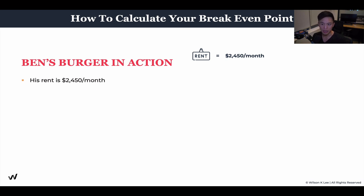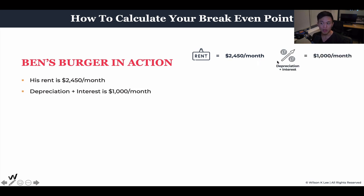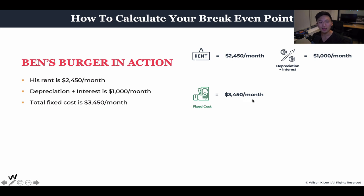Ben's Burger's projected rent is $2,450 per month. Because he borrowed money, he needs to pay interest, and on top of that, the renovation has depreciation to account for, which comes to roughly $1,000 per month. Adding these two together gives you the total fixed costs. No matter how many burger patties Ben sells — 10 burgers or 1,000 burgers — his fixed cost is still going to be $3,450.